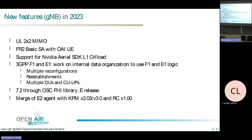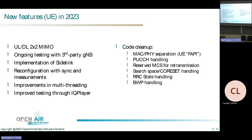One key feature this year has also been support for the E2 interface, with the E2 agent in the gNodeB supporting KPM version 2 and 3 and RAN control version 1. A lot of work has also gone into the UE — uplink MIMO as well as downlink MIMO 2x2 works with the OAI UE as well.